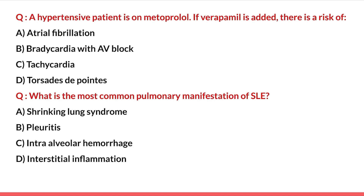A hypertensive patient is on metoprolol. If verapamil is added, what is the risk? Options are atrial fibrillation, bradycardia with AV block, tachycardia, and torsades de pointes. Metoprolol is a beta-blocker and verapamil is a calcium channel blocker — both are known to cause bradycardia. Combined, they cause more bradycardia and AV block. Atrial fibrillation and tachycardia are tachyarrhythmias, not bradyarrhythmias. So the best answer is option B: bradycardia with AV block.